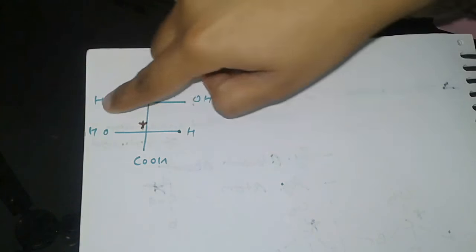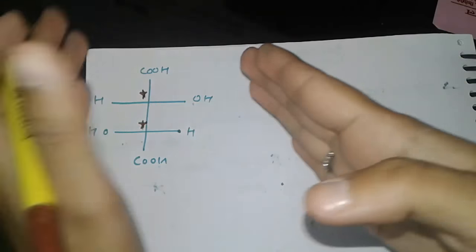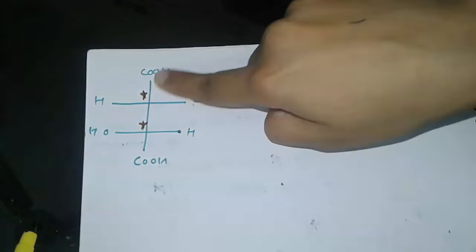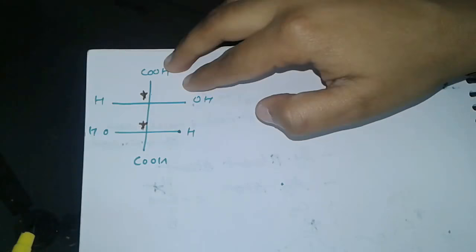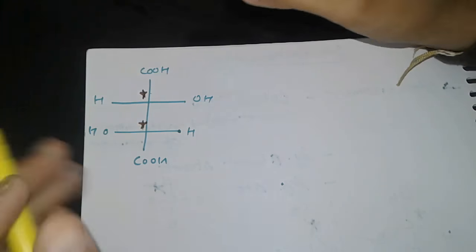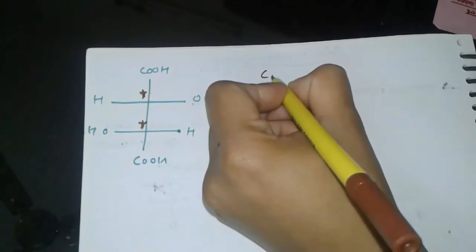If hydrogen is present in a horizontal line, then you have to do inversion, which is just opposite. And if it is in a vertical line, then you have to do retention of configuration.